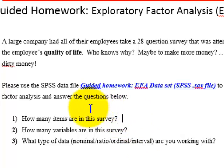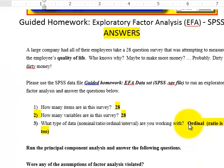How many items are in the survey? That means how many questions are in the survey? And there's 28. How many variables in the survey? That was a trick question. A variable and an item are the same thing. So there's 28 variables in the survey as well. What type of data are you working with? It's not nominal, it's not interval. It could be either ratio or ordinal, but I think I'm going to go with ordinal in this case.